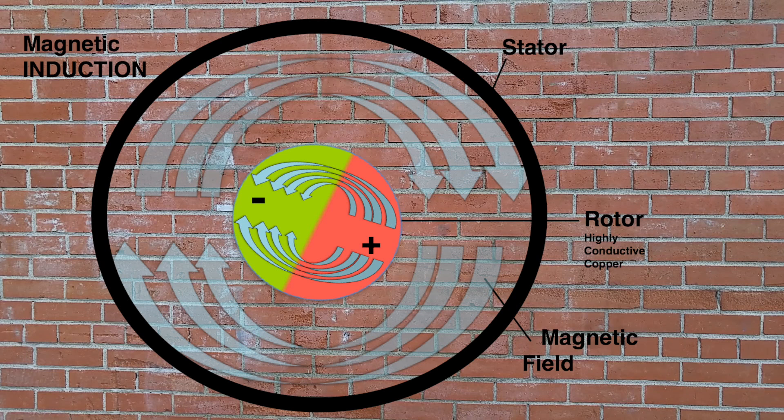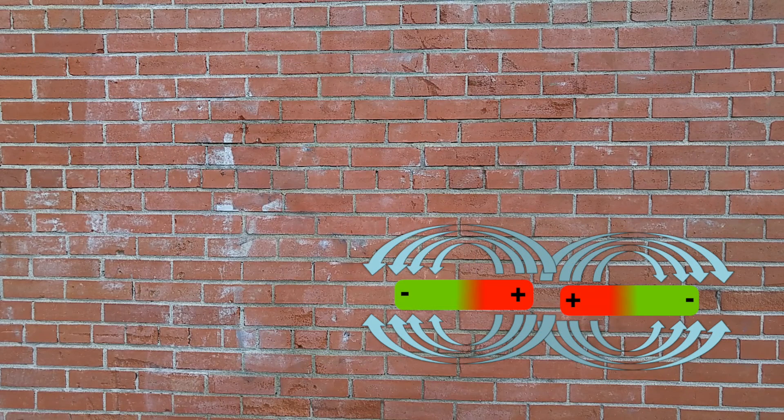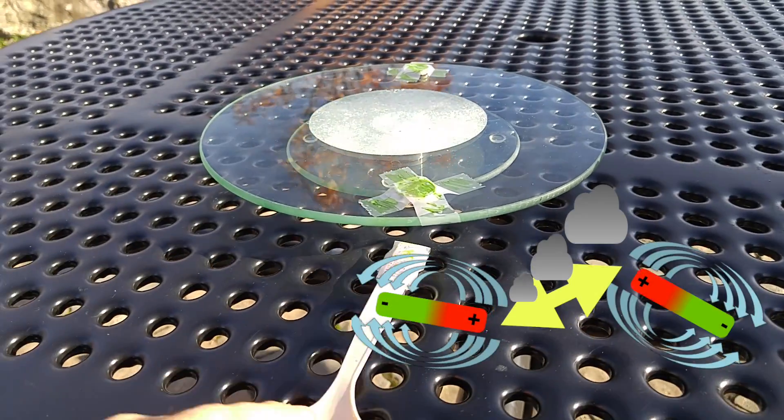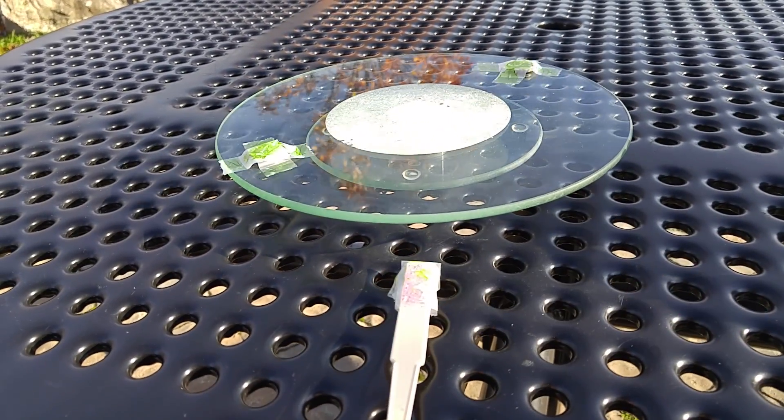Therefore, this new magnetic field, which is created around the rotor, interacts with the first magnetic field to create a rotation of the rotor. Exactly like having two magnets. Therefore, the wheels rotate as well.